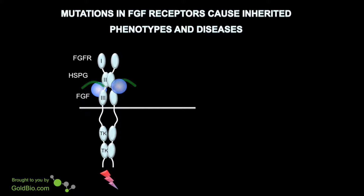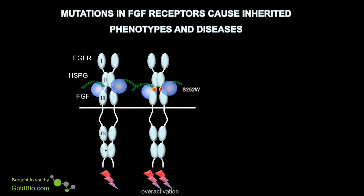Mutations in FGF receptors cause inherited phenotypes and diseases. Shown here is the active signaling complex of a wild-type FGF receptor complexed with heparin sulfate and FGF. This leads to moderate levels of cell signaling. However, if we have a mutation in the FGF receptor, such as the S252W mutation in the linker region between IG domain 2 and IG domain 3, this activates or over-activates the FGF receptor and still allows the receptor to bind to FGF ligands, which can further increase its activity.